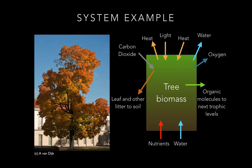The arrows coming out of the box are flows of matter or energy out of the tree — heat is radiated out, water, oxygen diffused out, organic molecules to the next trophic level if something eats it, any leaf litter passes to the soil. So the tree is an example of a system.